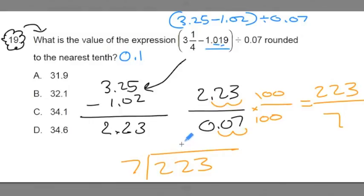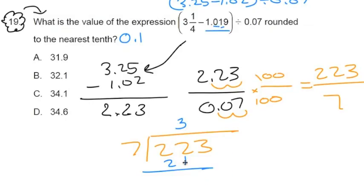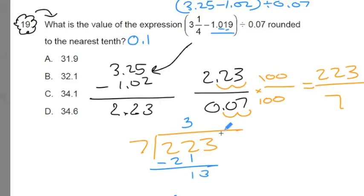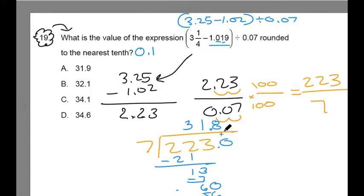Let's do this division problem. 7 goes into 22 how many times? 3. 3 times 7 is 21. 22 minus 21 is 1. 7 goes into 13 how many times? Once. 1 times 7 is 7. 13 minus 7 is 6. Let's drop down a 0 here, so we're going to go into the decimals. 7 goes into 60 how many times? 8. 8 times 7 is 56. Let's stop here. The quotient to this problem is approximately 31.8. Now what answer is approximately 31.8? The answer is A.